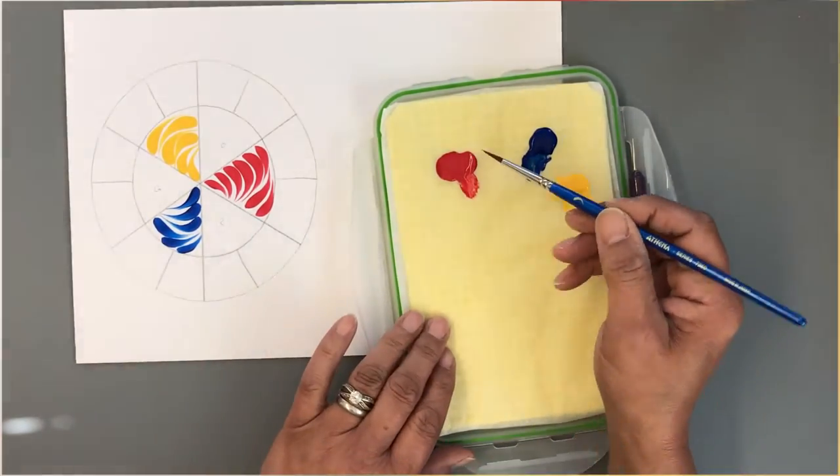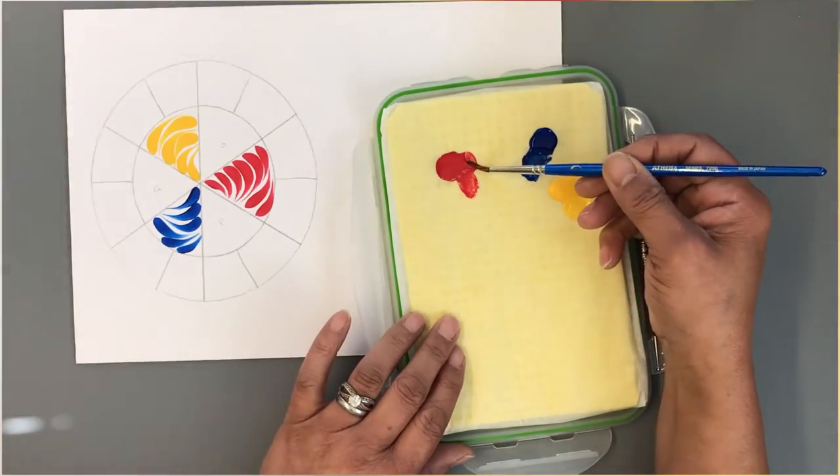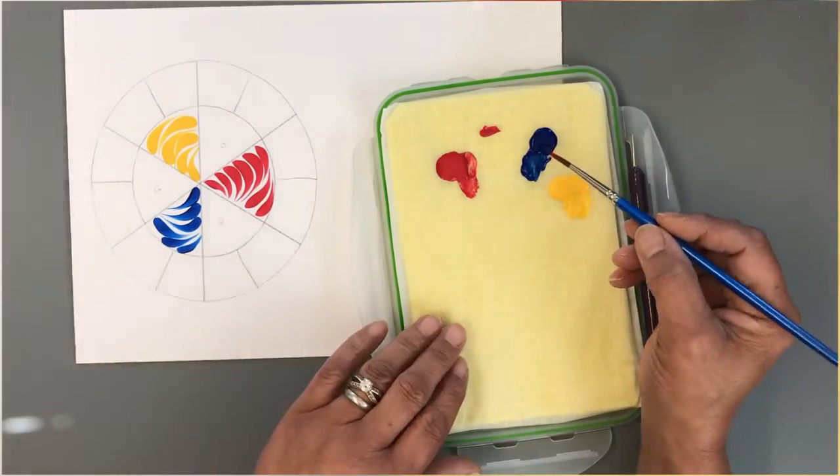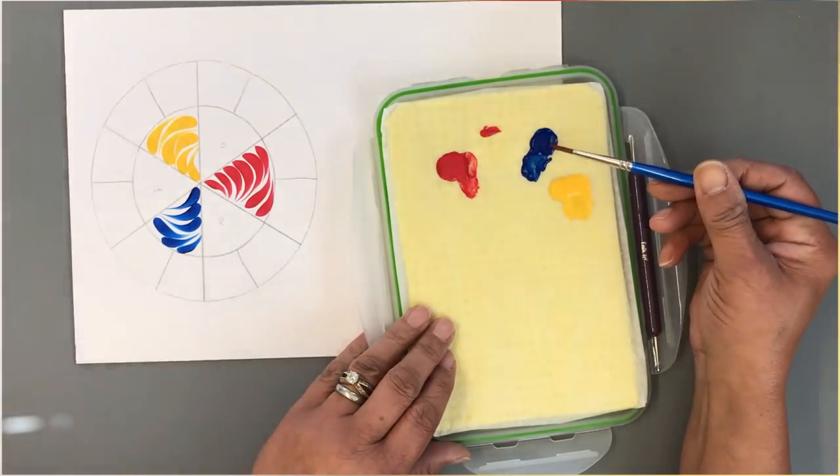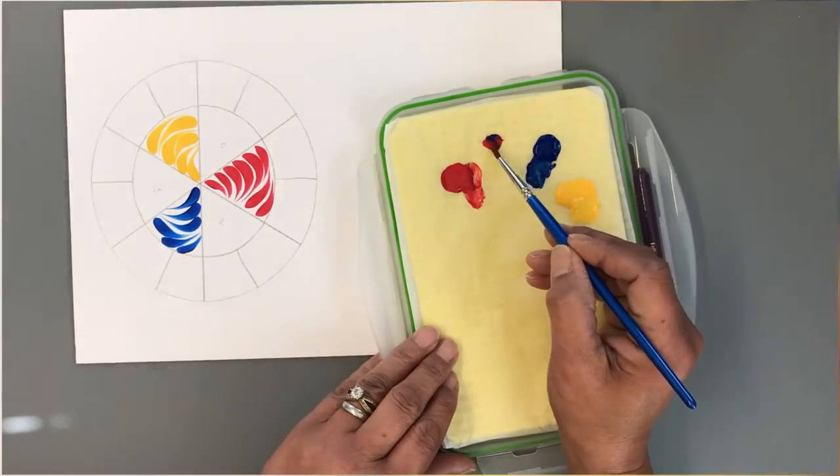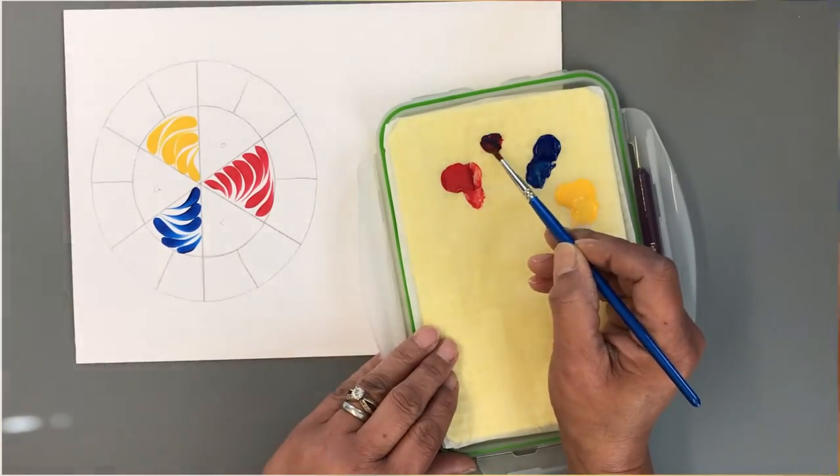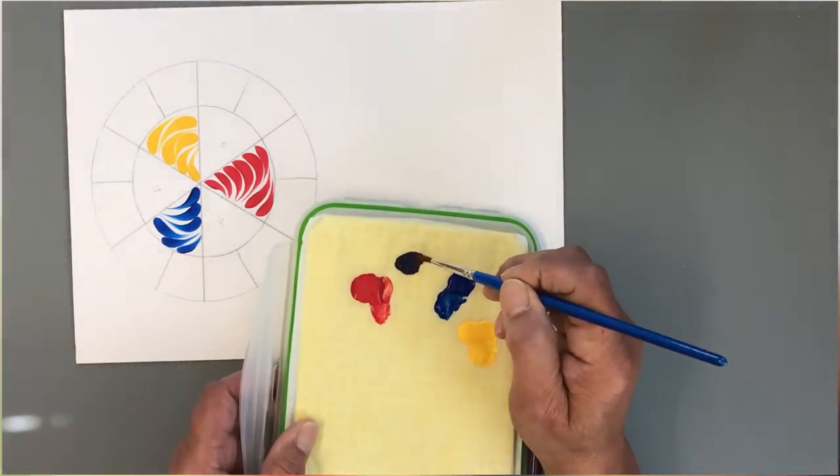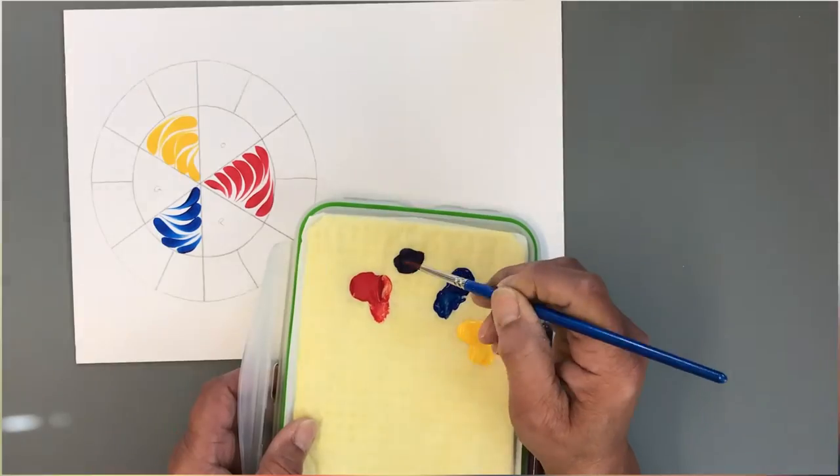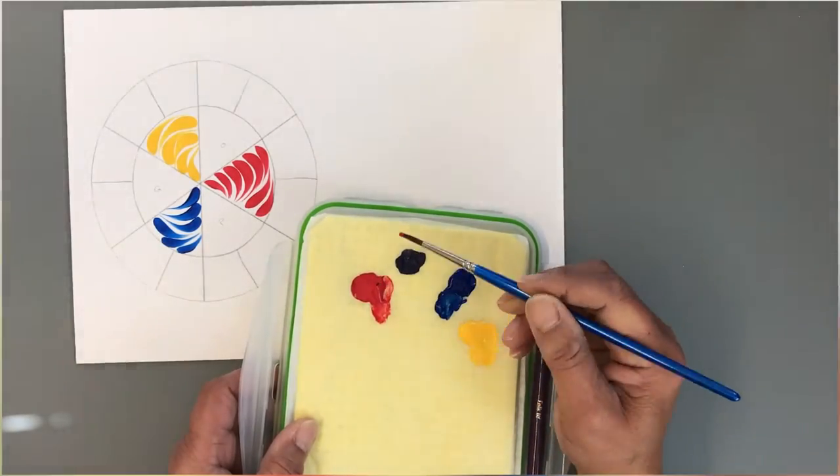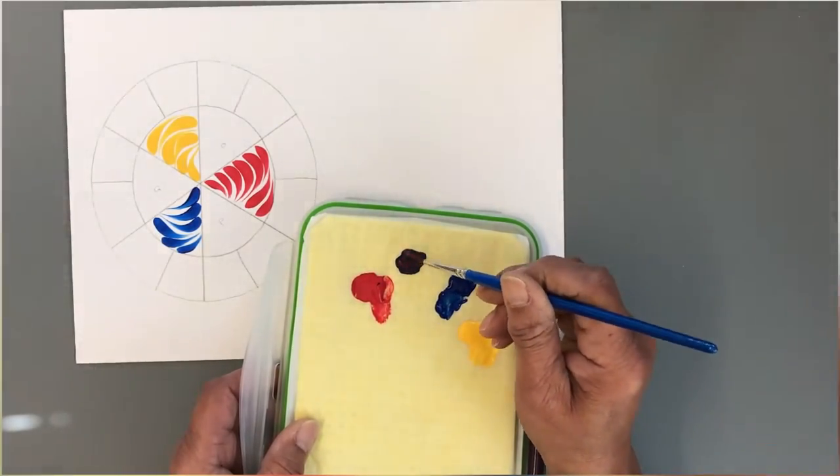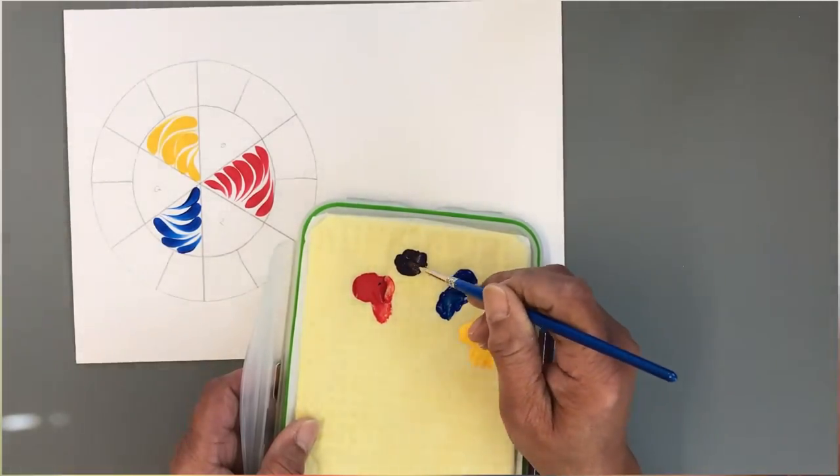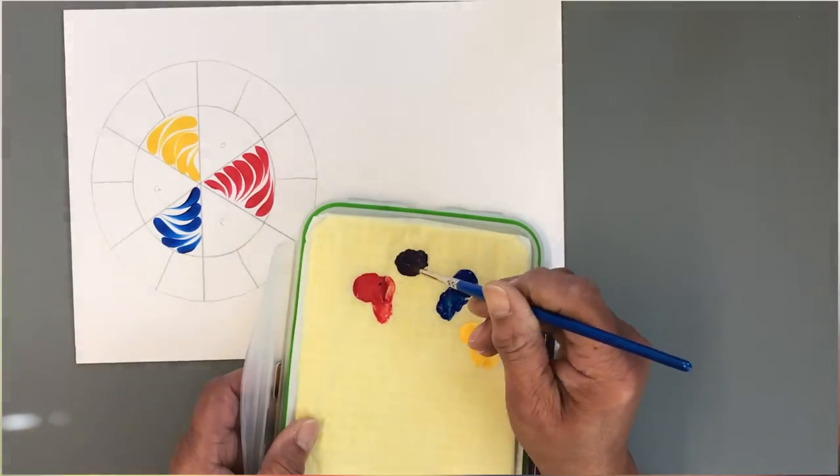So for the purple we'll take a scoop of the red and I wouldn't normally brush mix but we're only doing small amounts. And some of the blue. And you're going to mix those together. Now that's still very blue. So I'm going to take a bit more red. And that's a nice deep purple.